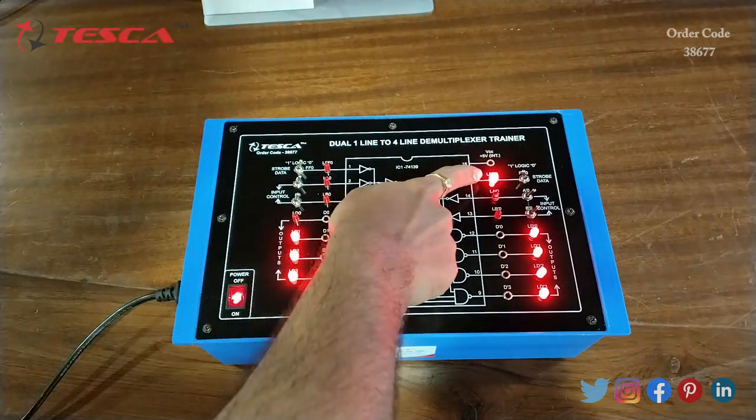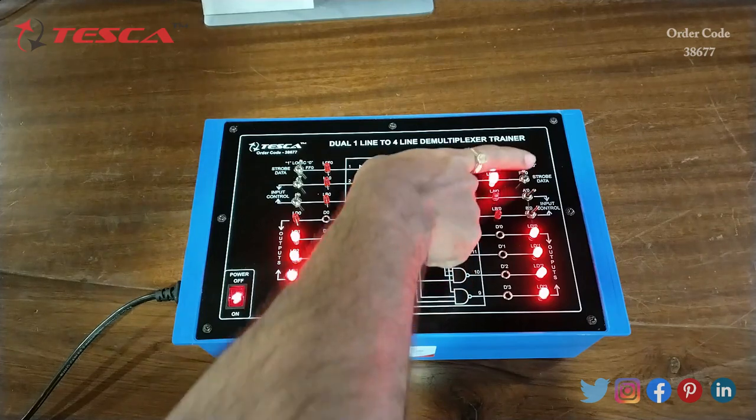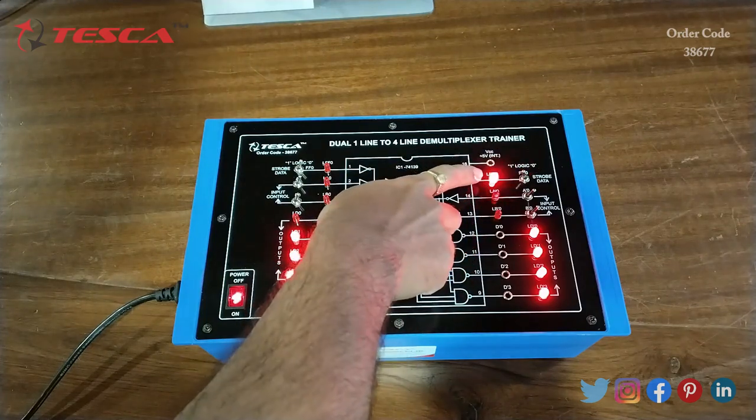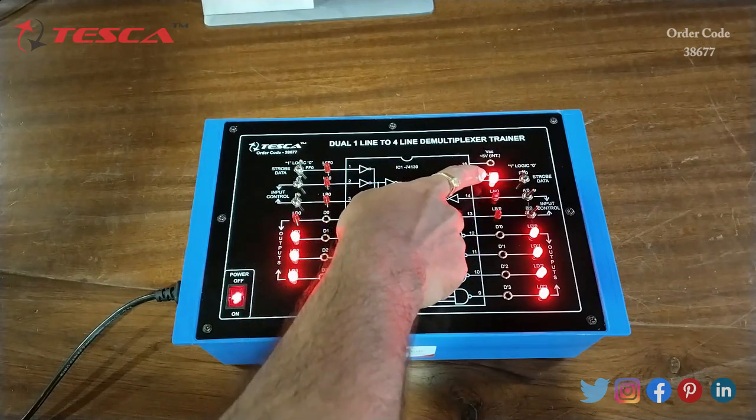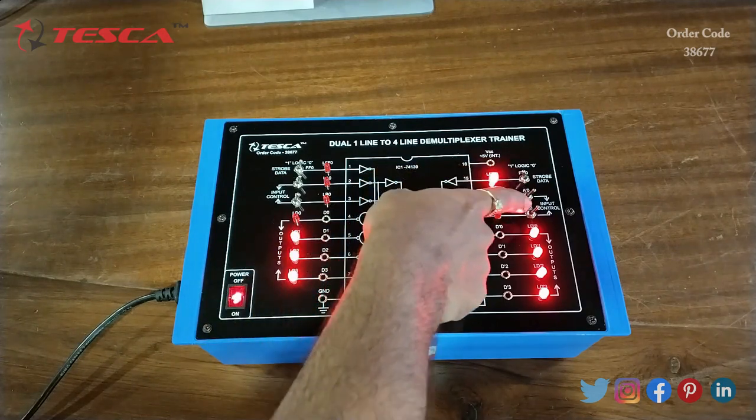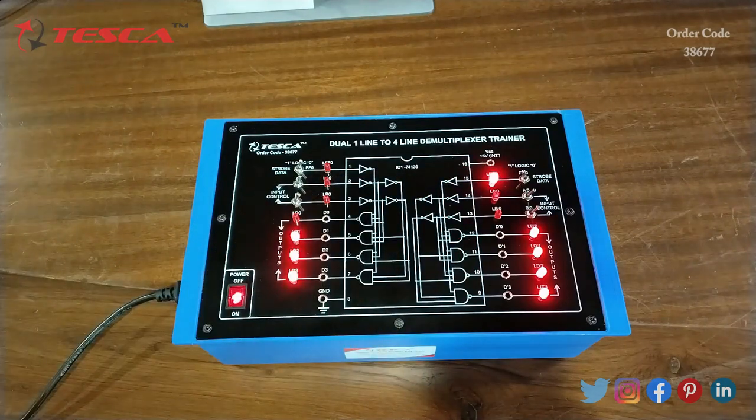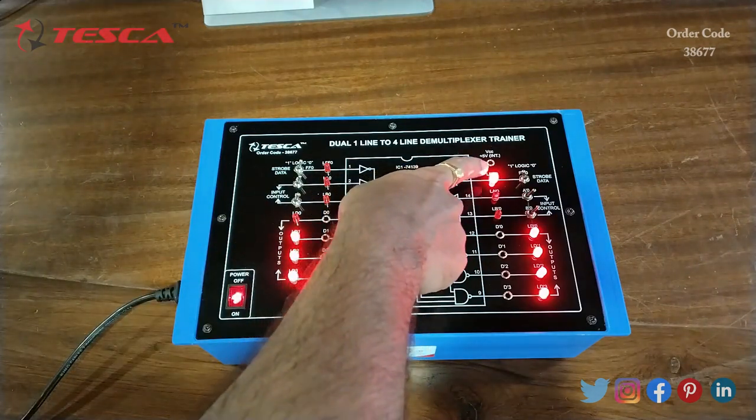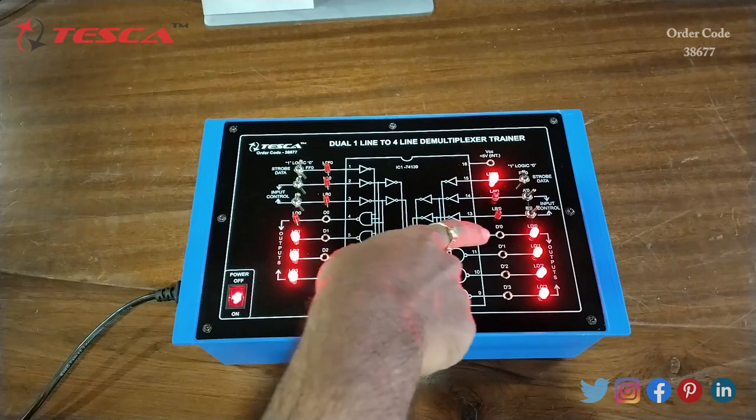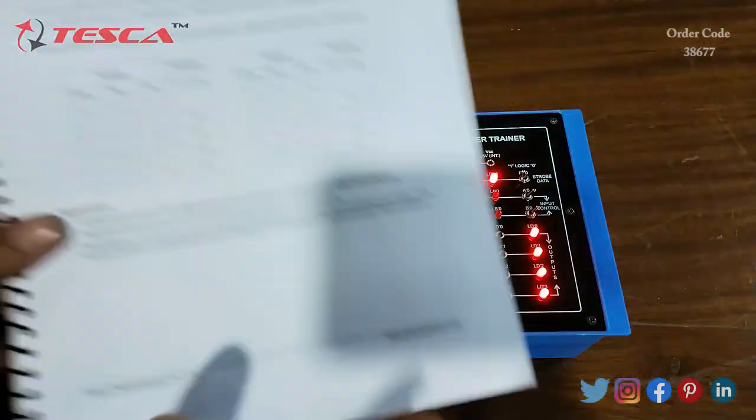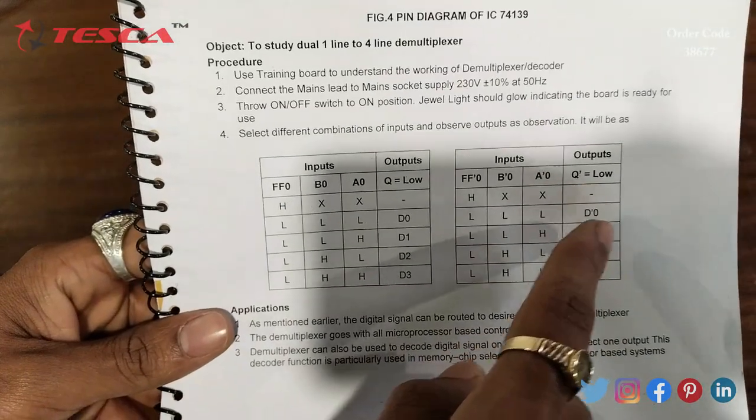We are getting high input at FF0. When we switch this position to 1, we get 1 at FF0. We are keeping A0 and B0 at low positions, that is 0. At high position of FF0 we are getting high input at the output like this.